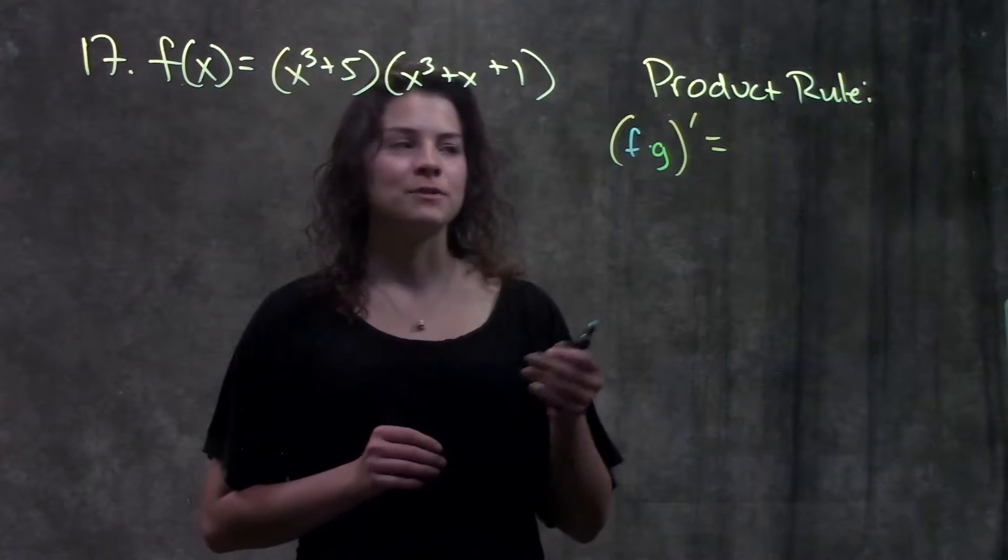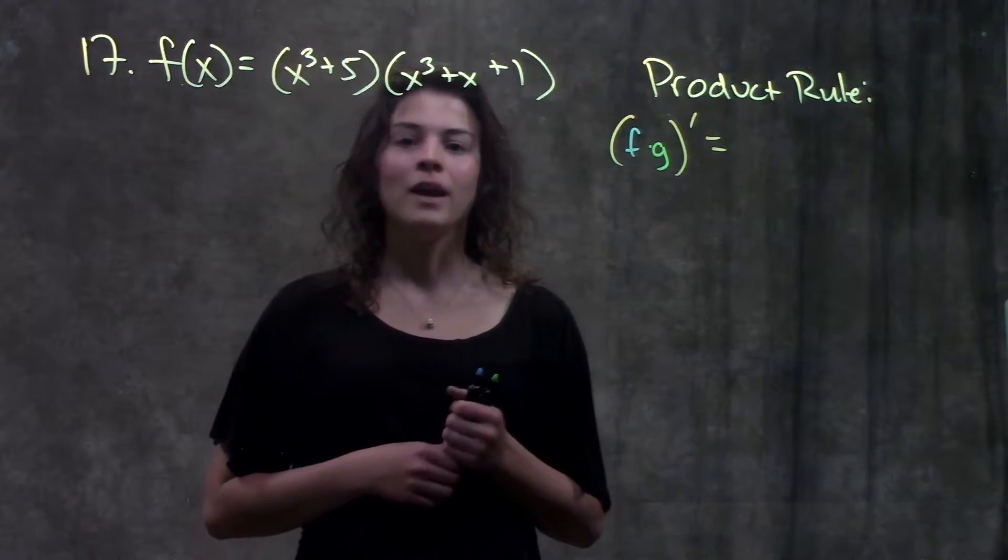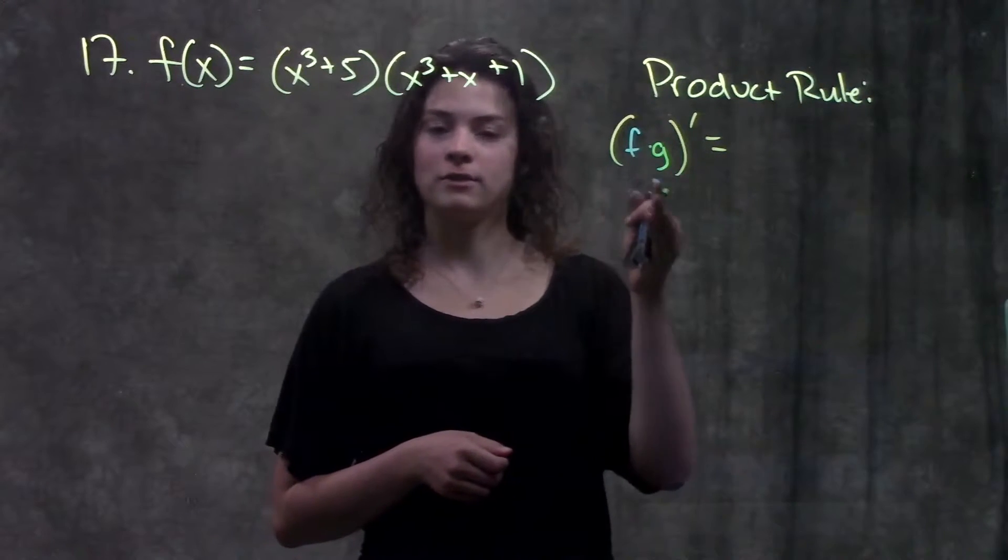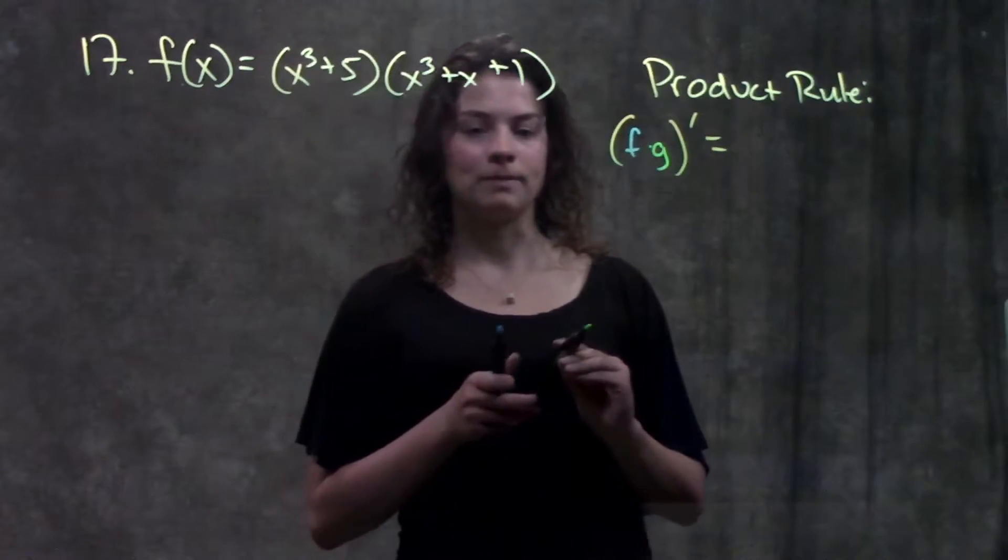Before we go through our example, though, let's first go through what product rule tells us. So the product rule says that if we're trying to find the derivative of a function that's a product of two different functions, the way we do that is we just follow this pattern.